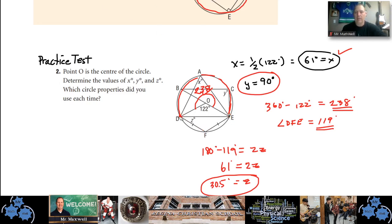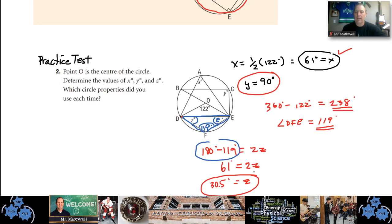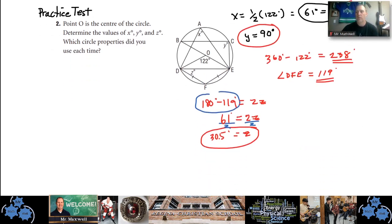I need z, not angle F. Notice this is an isosceles triangle, so the two base angles must be equal. Knowing angle DFE is 119, and the triangle's angles must add up to 180: 180 minus 119 equals two times z. Solving gives z equals 30.5 degrees. For problems that look complicated, just take one piece at a time and apply the rules from Chapter 8.